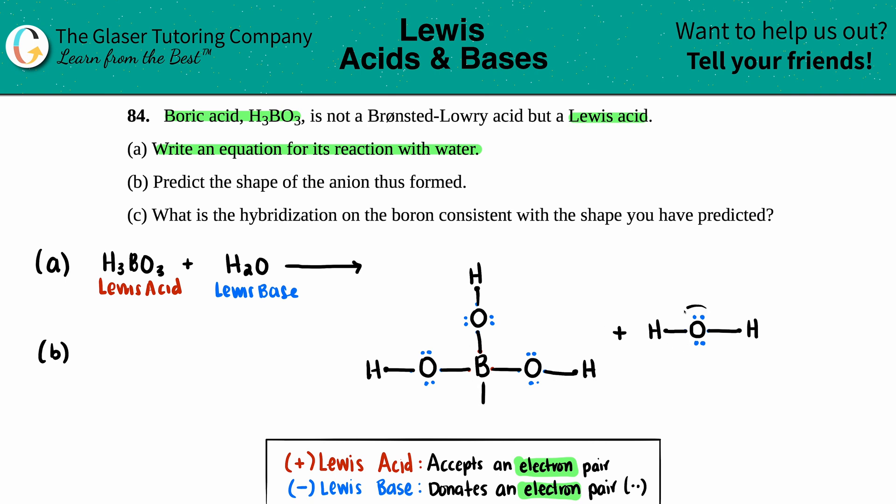Those electrons turn into a bond. So if I start building, I have a bond with that oxygen and those two electrons are this bond. I have an O with two hydrogens branching off, and then you only have one lone pair left.